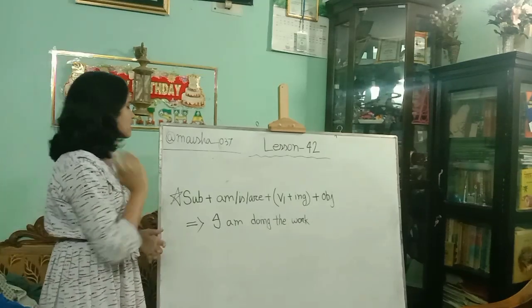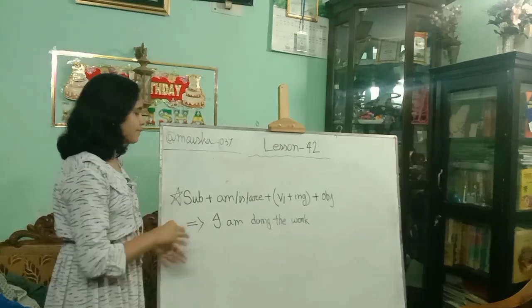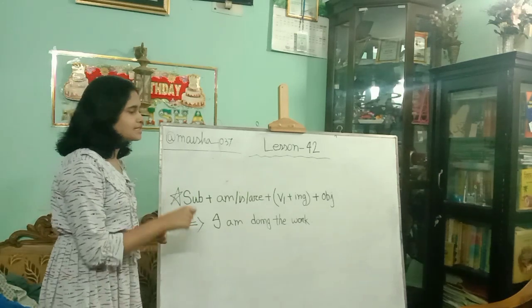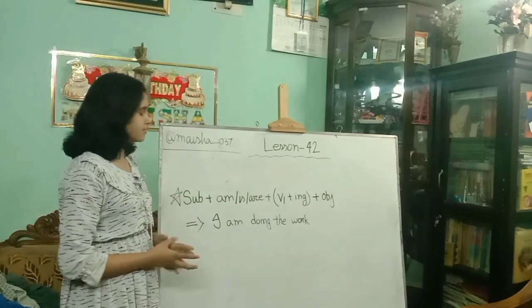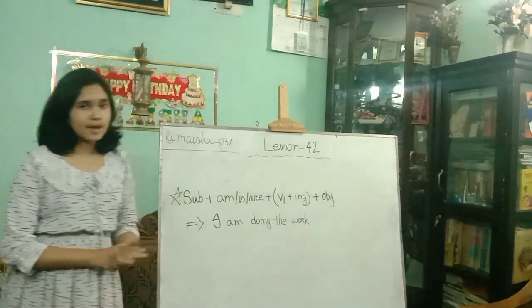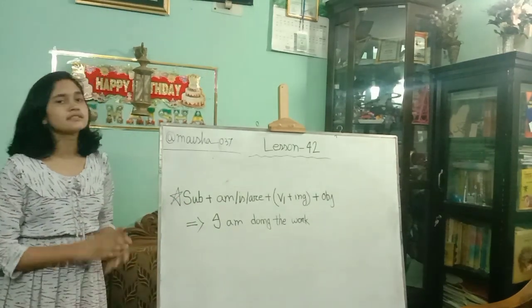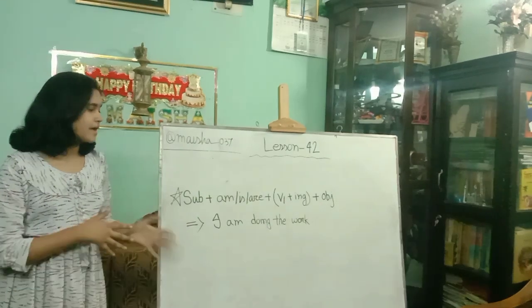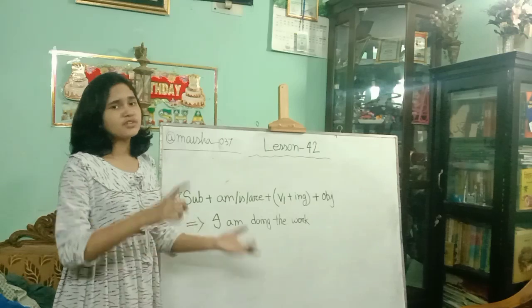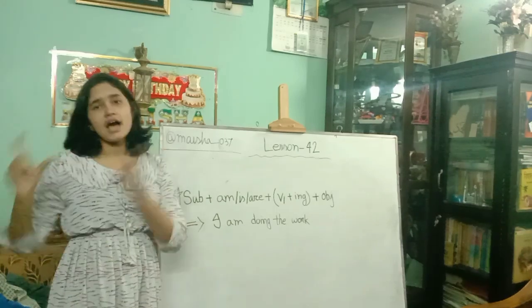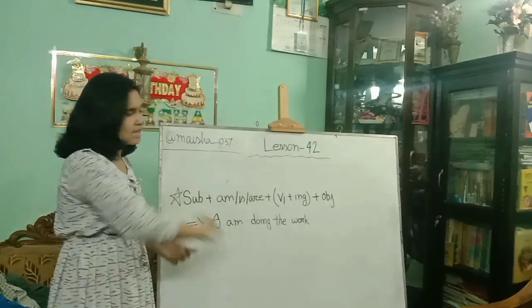Our structure is subject plus am/is/are plus verb-ing plus object. For example, I am doing the work. Here 'I' is the subject and then 'am' is the auxiliary verb from am/is/are, and then 'doing' is verb plus -ing, that means verb base form plus -ing form, and then 'the work' is the object.